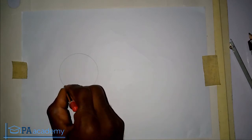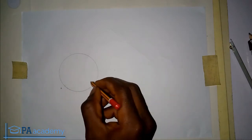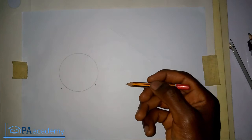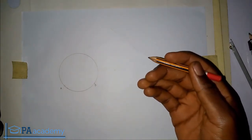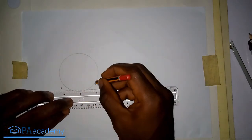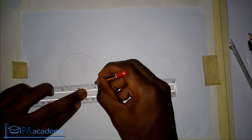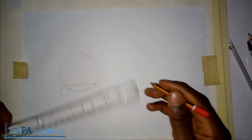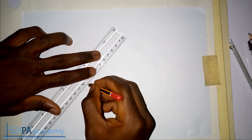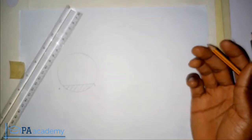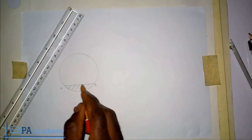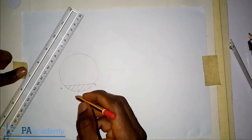Let's pick our arc from this point — let me call it point A — to this point B. This line from point A to point B represents our arc. Now, since a segment is bounded by an arc and a chord, let me draw a chord from point A to point B. This particular portion is what we call the segment.